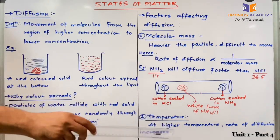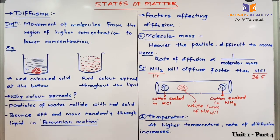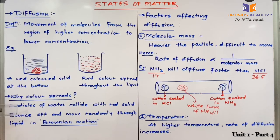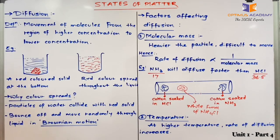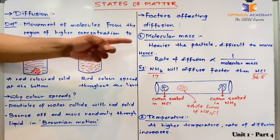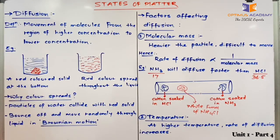In this video we understood diffusion — the movement of particles from a region of higher concentration to lower concentration — wherein particles collide, bounce off, and move randomly. Remember these key points: the factors affecting diffusion are molecular mass and temperature. The rate of diffusion is inversely proportional to molecular mass, whereas the rate of diffusion is directly proportional to temperature. Thank you.